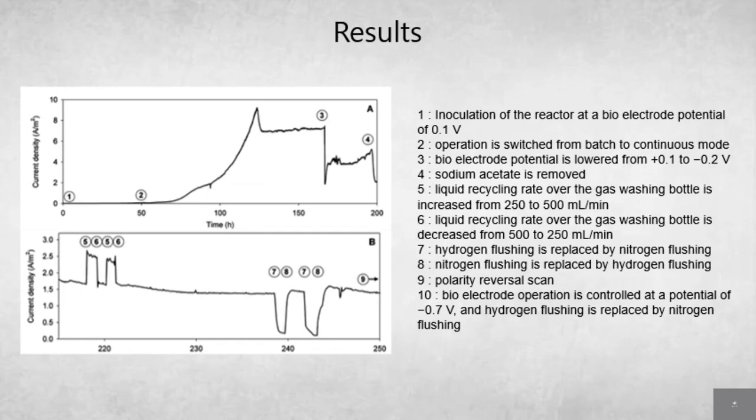Then the results. As we can see, at first we have the inoculation of the reactor at a bioelectrode potential of 0.1V. We're basically just putting all the biofilm on the anode. Currently it is the anode. Then step two, we switch from batch to continuous mode. Now we are nourishing the biofilm continuously and we can see that we are beginning to produce current density. Now the biofilm is developing, it's nourishing from acetate and H2 until some point, like 7.2A/m² if I remember well, of current density.